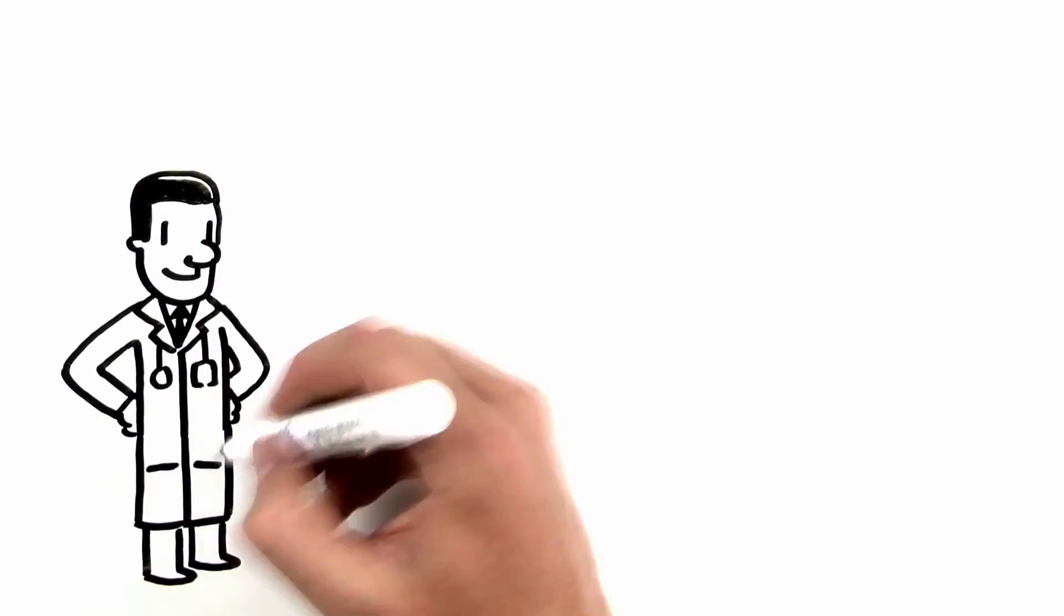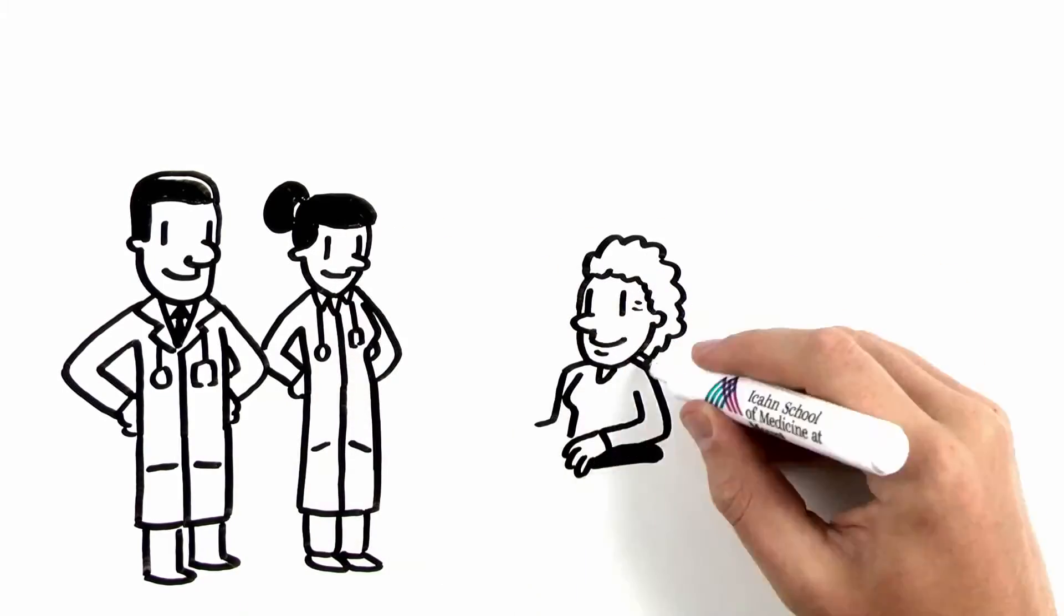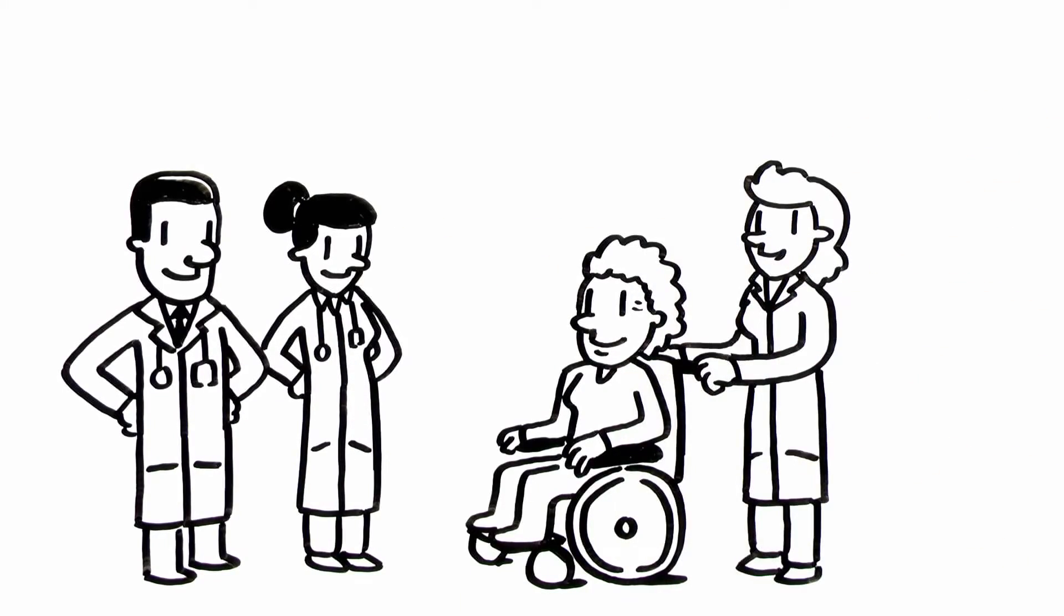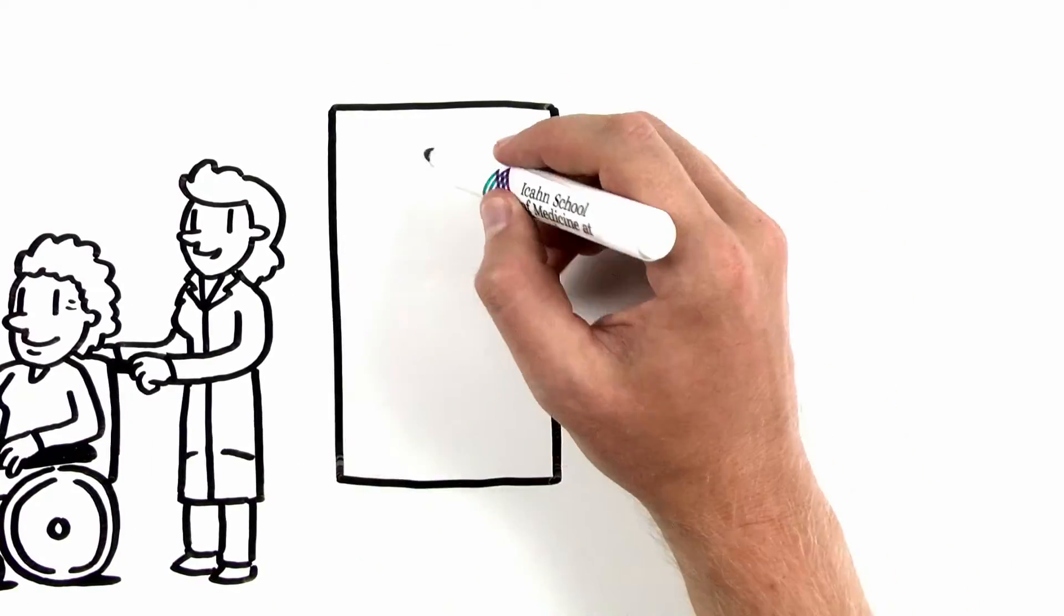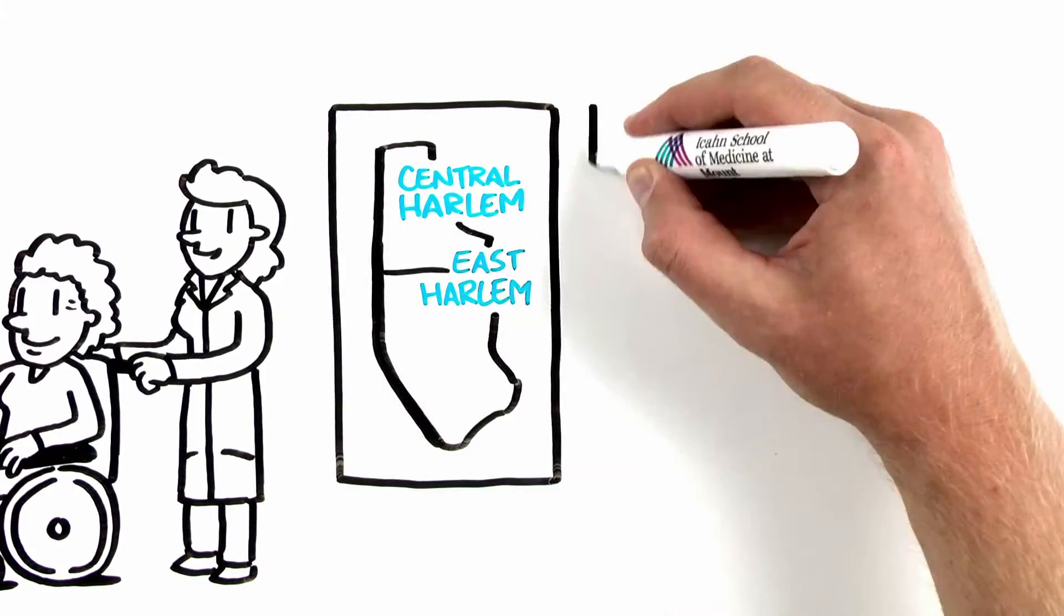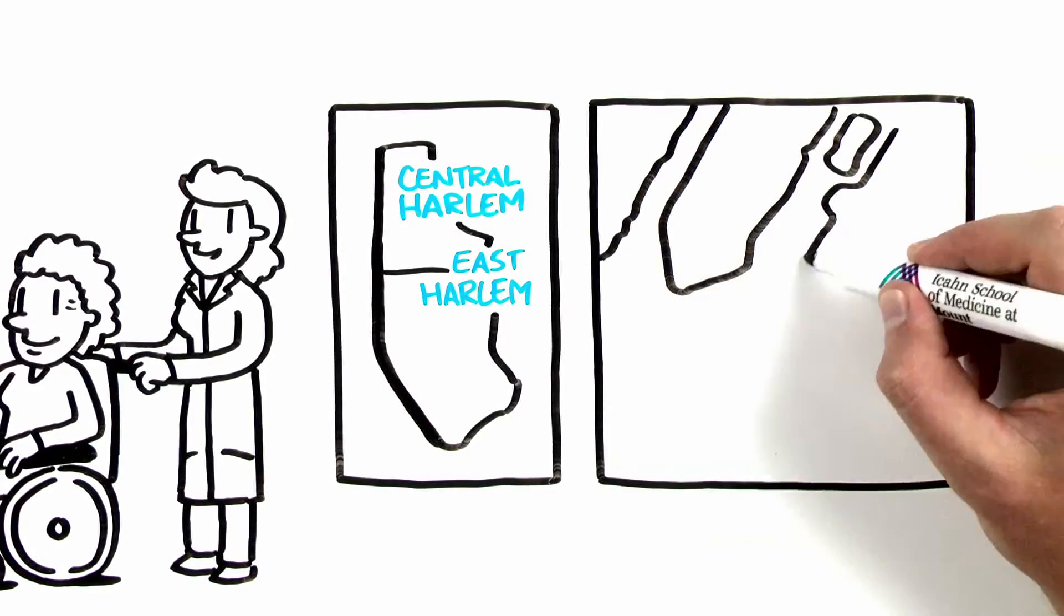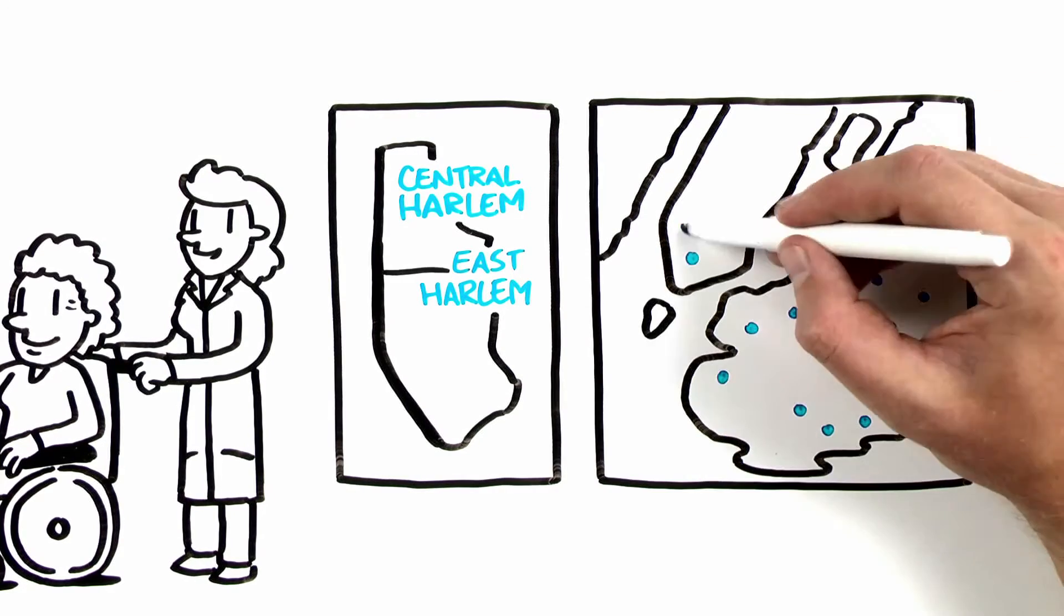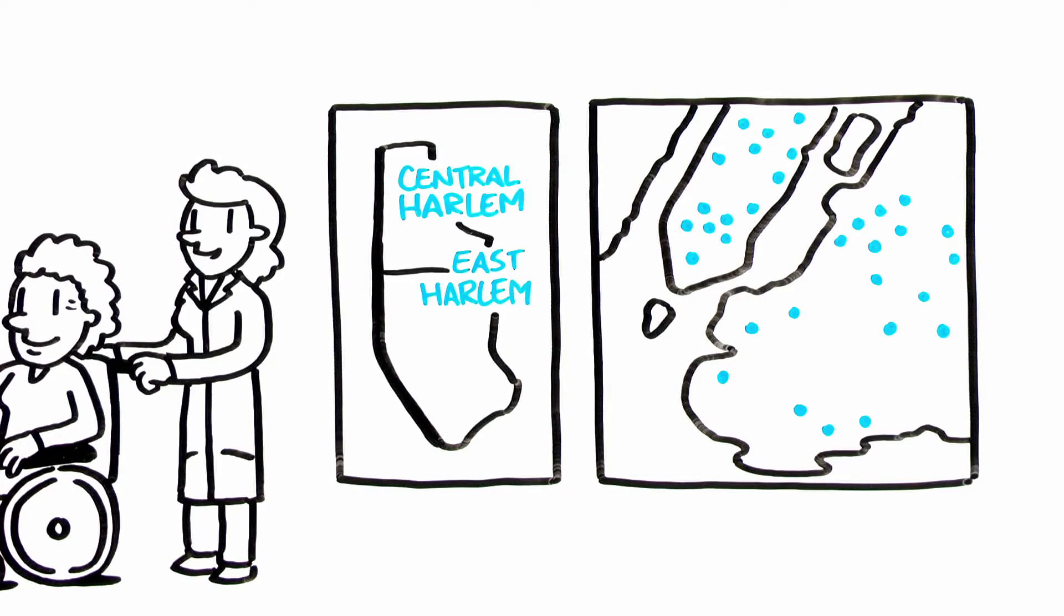And it's important for us, it's part of our values, it's core to who we are, that we take care of people who have the greatest need for health care, which is why we are in East Harlem, we're in Central Harlem, and we cover now with our health system every corner of New York City because we care about communities and we care about the patients who come to us for their health.